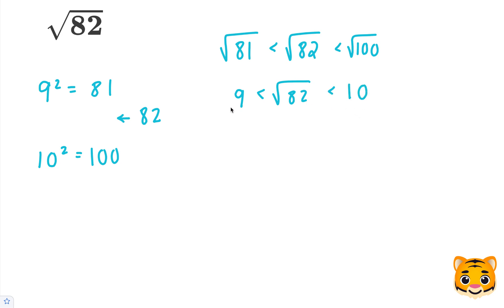Now we can see that 9 is less than the square root of 82, which is less than 10. So our square root of 82 lies between 9 and 10. However, 82 is a lot closer to 81 than it is to 100. So our decimal will be closer to 9 than it is to 10.